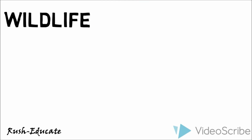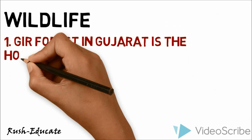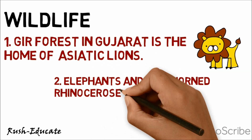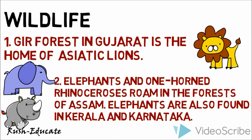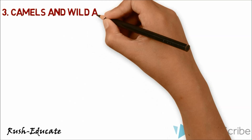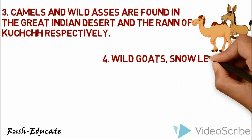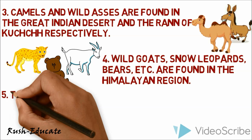Forests are home to a variety of wildlife. There are thousands of species of animals and a large variety of reptiles, amphibians, mammals, birds, insects, and worms which dwell in the forest. The tiger is India's national animal. Gir forest in Gujarat is the home of Asiatic lions. Elephants and one-horned rhinoceroses roam in the forests of Assam. Elephants are also found in Kerala and Karnataka. Camels and wild asses are found in the Great Indian Desert and the Rann of Kutch respectively. Wild goats, snow leopards, bears, etc. are found in the Himalayan region.